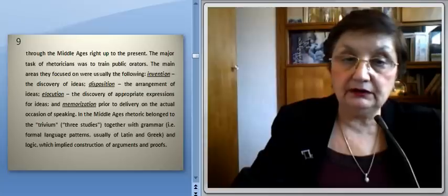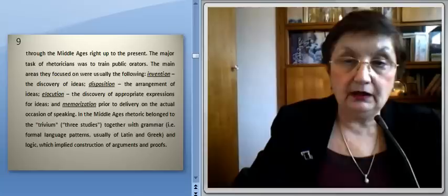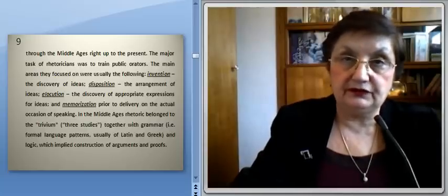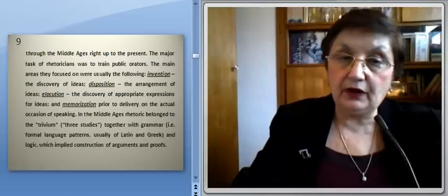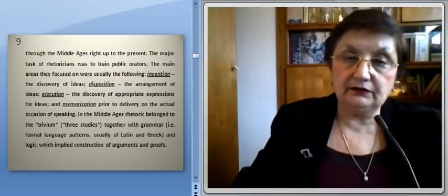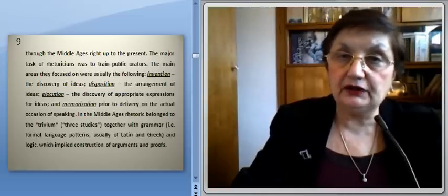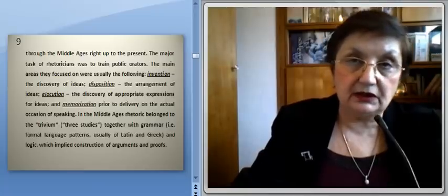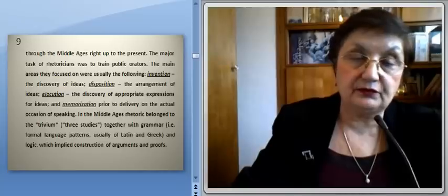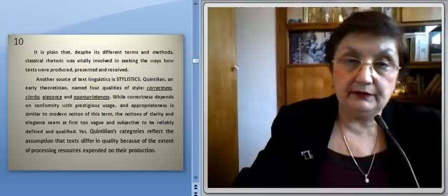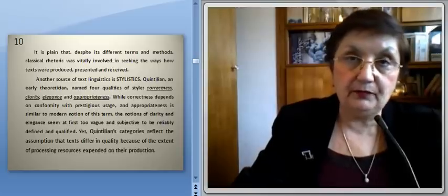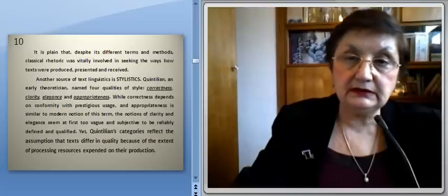In the Middle Ages, Rhetoric belonged to the Trivium — three studies — together with grammar, that implied formal language patterns, usually of Latin and Greek, and logic, which implied construction of arguments and proofs. It is plain that, despite its different terms and methods, classical rhetoric was vitally involved in seeking the ways how texts were produced, presented, and received.